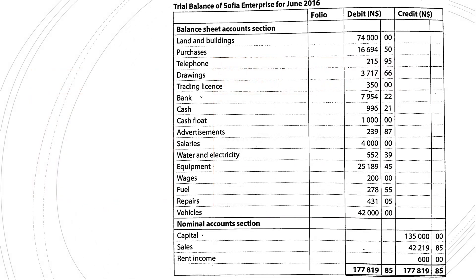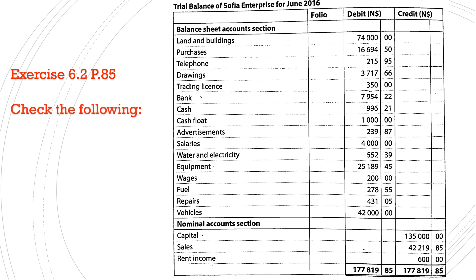Now that we know our rules, we can look at the homework. Exercise 6.2, page 85. You were provided with a trial balance which was prepared by an inexperienced bookkeeper. You had to correct this trial balance, but to do this, you first had to check the accounts.